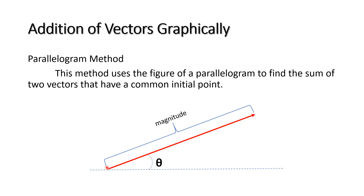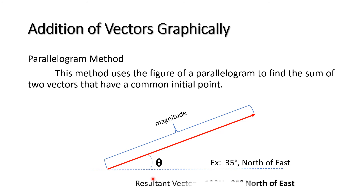The acute angle formed by our resultant vector and the x-axis gives us the direction. For example, 35 degrees north of east. If the magnitude of our resultant vector is 120 newtons, then the correct way of expressing our resultant vector is: 120 newtons, 35 degrees north of east. Since this is a vector quantity, we must always state both the magnitude and the direction.